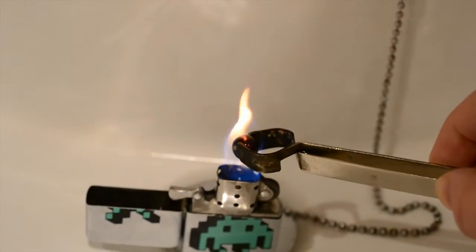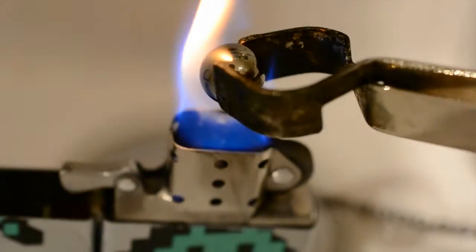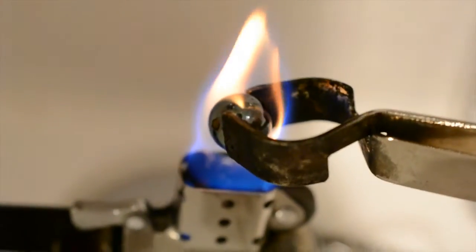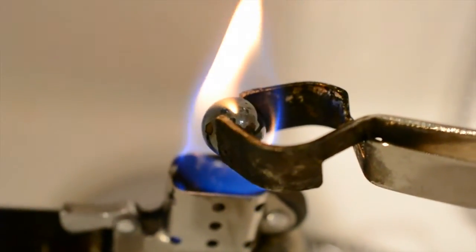Continue to heat it up until it starts to blacken. This blackening is due to soot build up from the fire, as well as oxides building up on the surface.